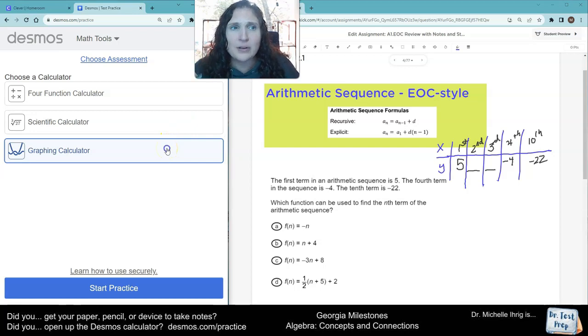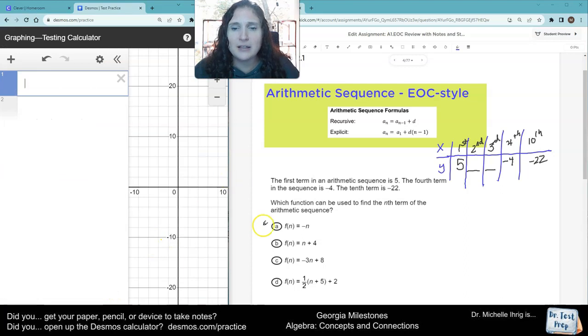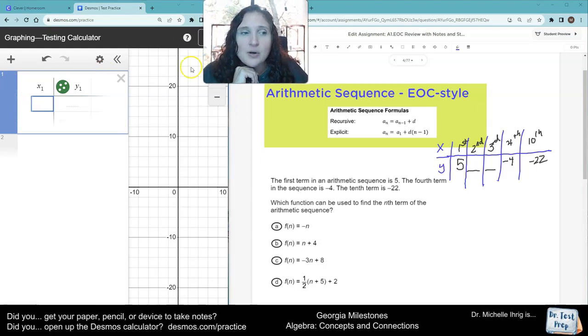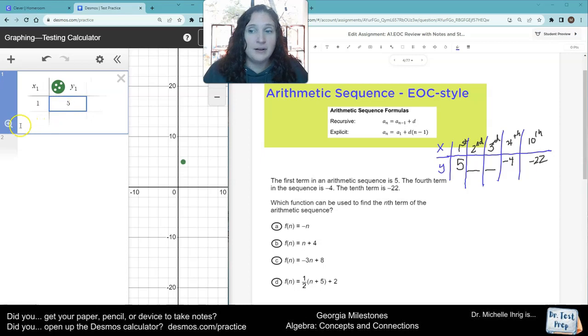So we're going to create a table. And this might be the, if you're going in order, this is the first time you're going to see me teach you how to do a table. So open up the graphing calculator and go ahead and hit this plus sign on the left. And we're going to hit plus sign table. So what we're going to do is we're not going to put in numbers for the second and third, but we will put in the other numbers. So I've got one, five, negative four. I'm sorry, four, negative four, because my four is my x and negative four is my y, and 10 and negative 22.